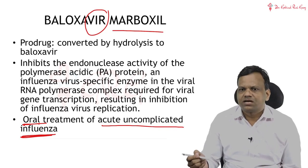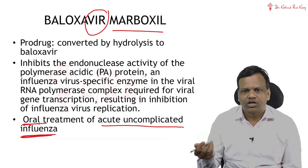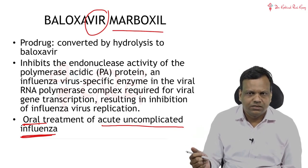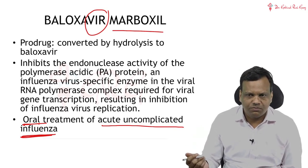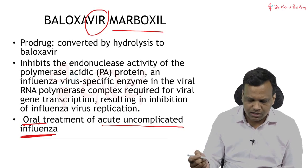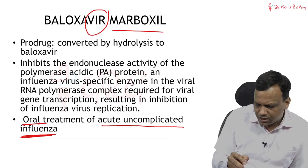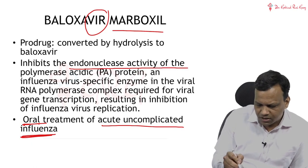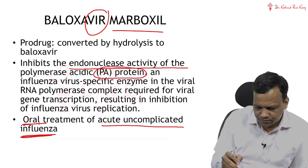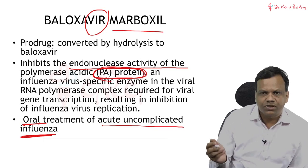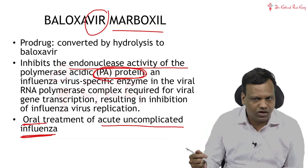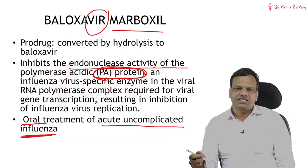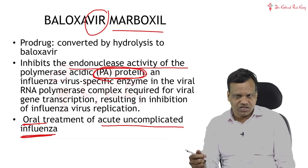This drug basically inhibits RNA polymerase, or simply the formation of messenger RNA in the virus. RNA polymerase will not be able to work, transcription will not occur, and it inhibits that by inhibiting the endonuclease activity of the PA protein of the virus. In the RNA polymerase complex, one of the proteins required is called PA protein — Beloxavir inhibits that PA protein in the influenza virus.